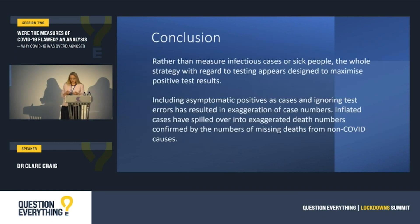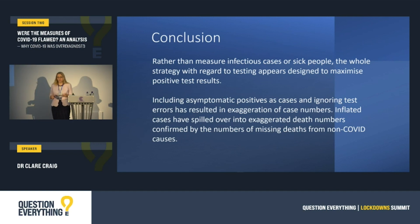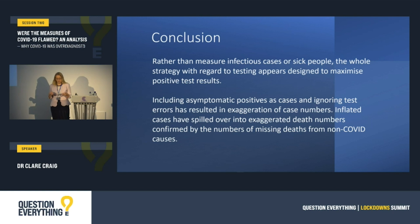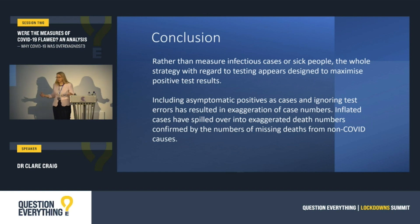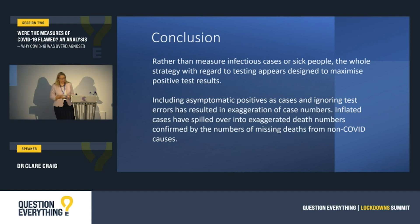Rather than measuring infectious cases or sick people, our whole strategy around testing appears designed to have maximised positive test results. By including asymptomatic positives as cases and ignoring test errors, we've exaggerated the case numbers. This has fed through to exaggerated death numbers, and we know this because we have missing non-COVID deaths in the data. Thank you.